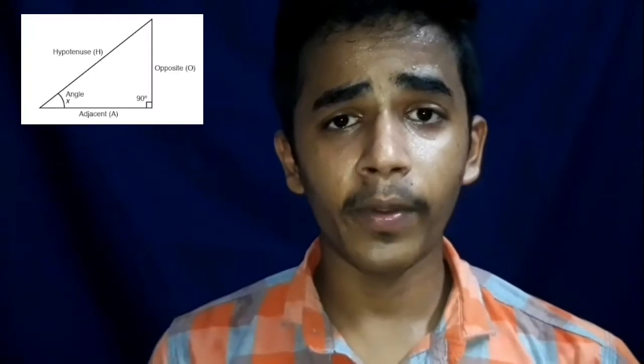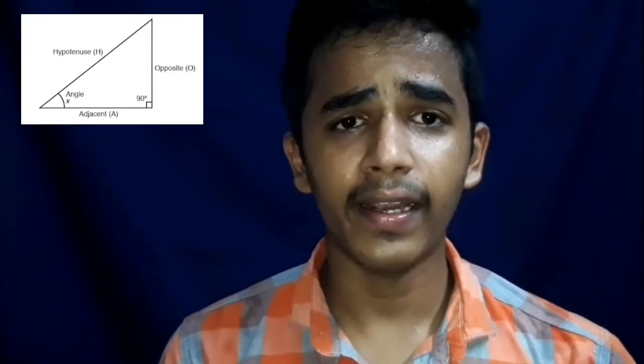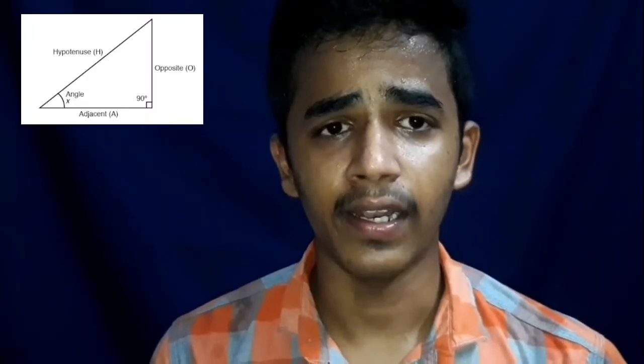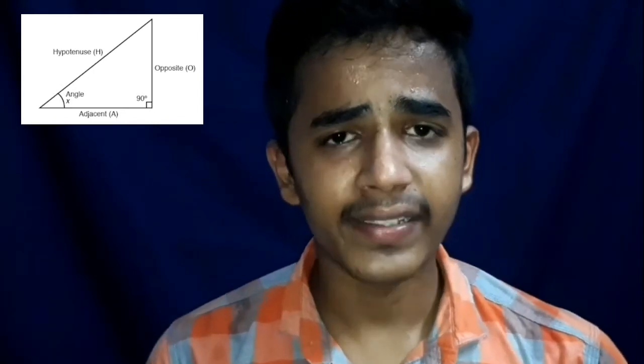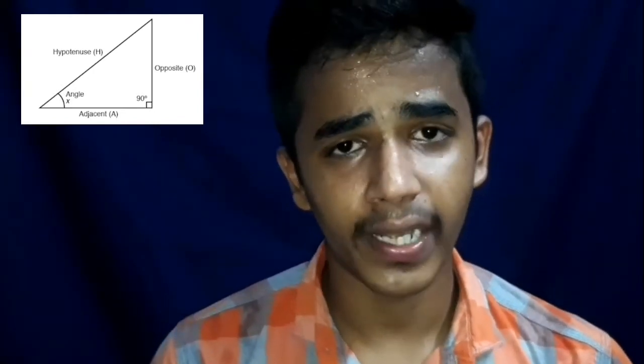The whole chapter of Trigonometry we are going to use only one triangle and that triangle is the right angle triangle. What is a right angle? The exactly 90 degree angle is called a right angle.